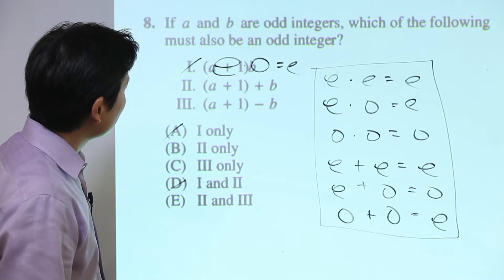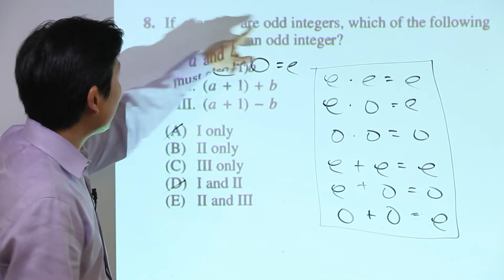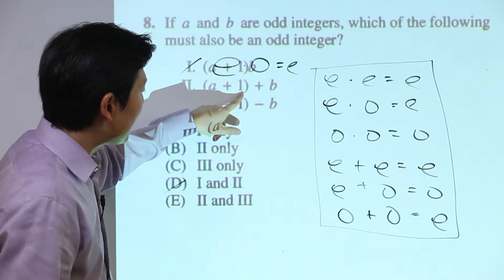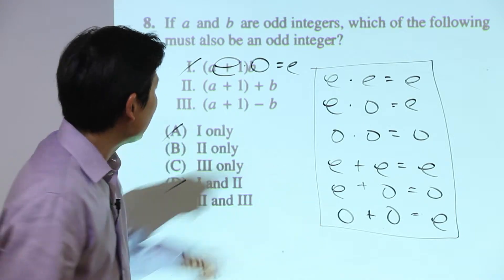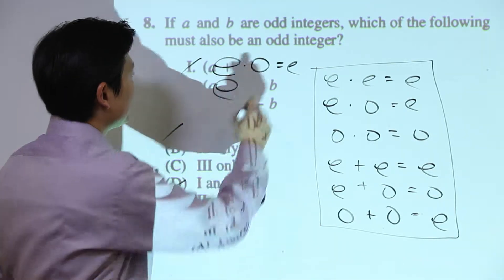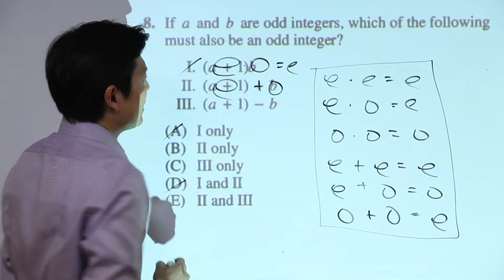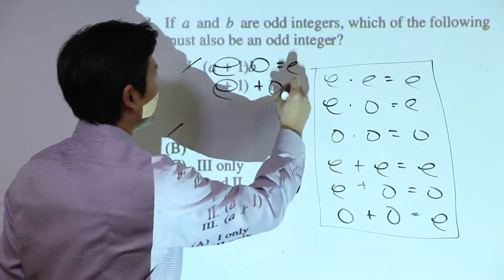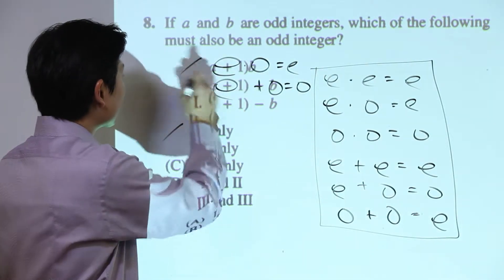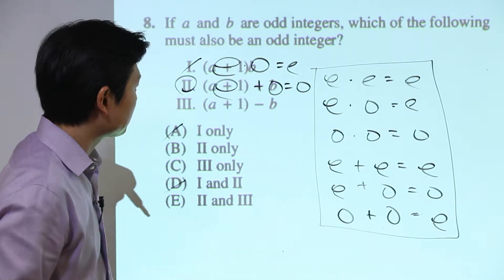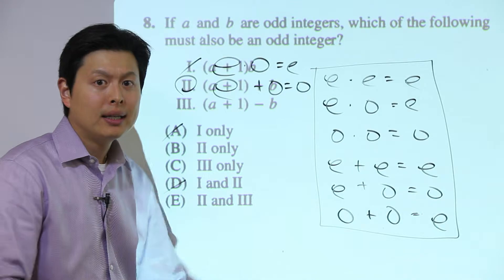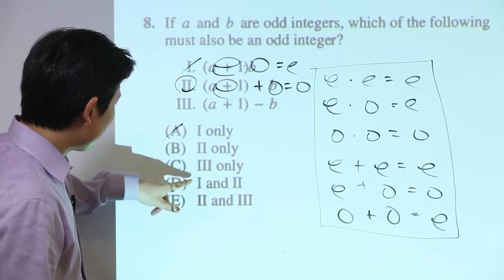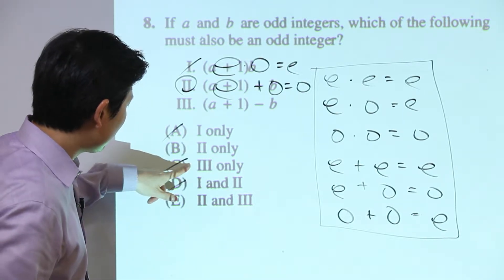For Roman numeral II: (a + 1) + b. Again, a is odd and 1 is odd, so a + 1 is even. Then even plus b, where b is odd — even plus odd is always odd. So Roman numeral II is always odd. Since II must be an answer, we can eliminate choice C, which doesn't include it.